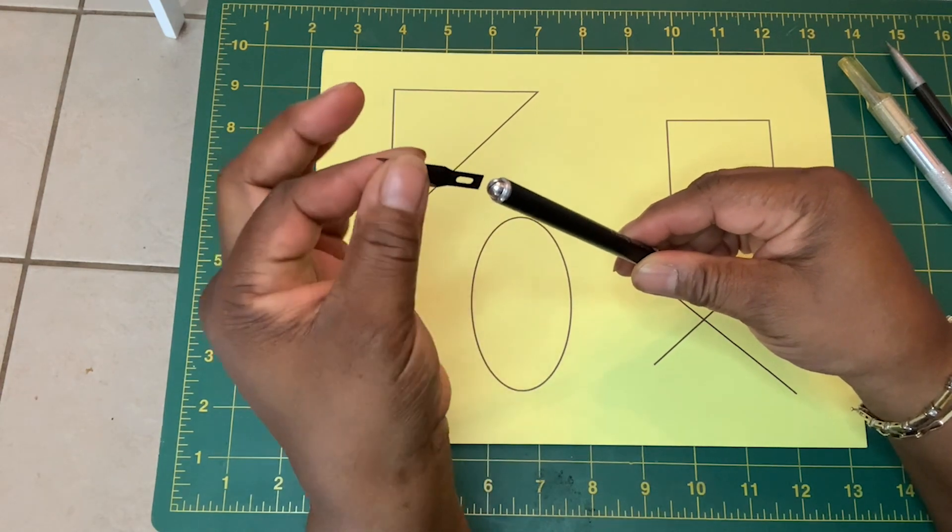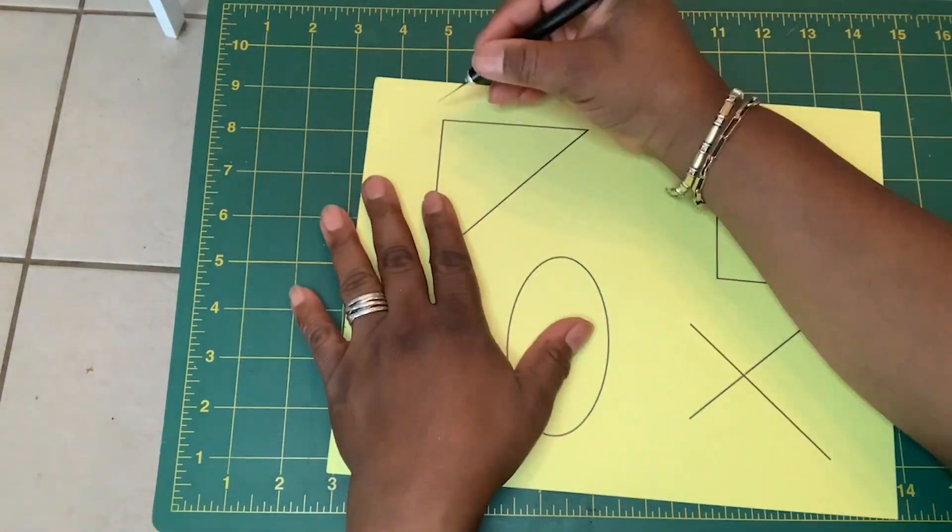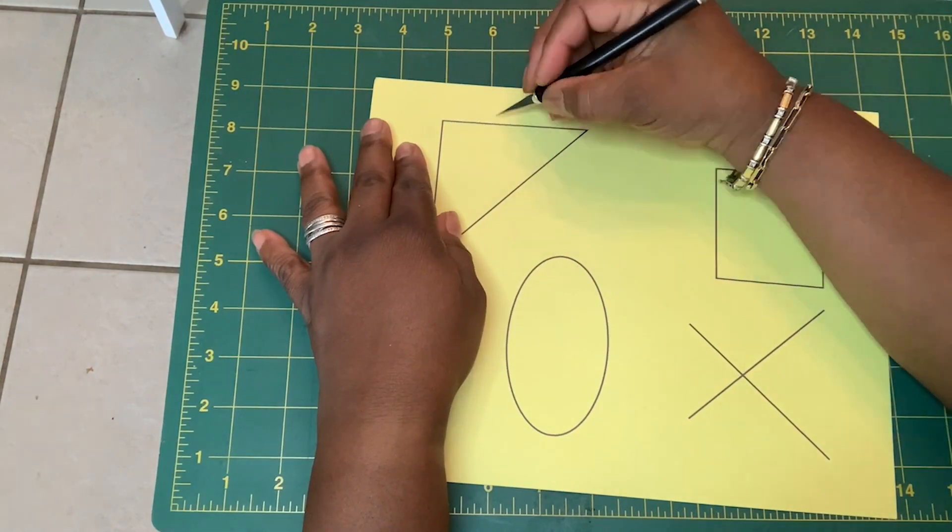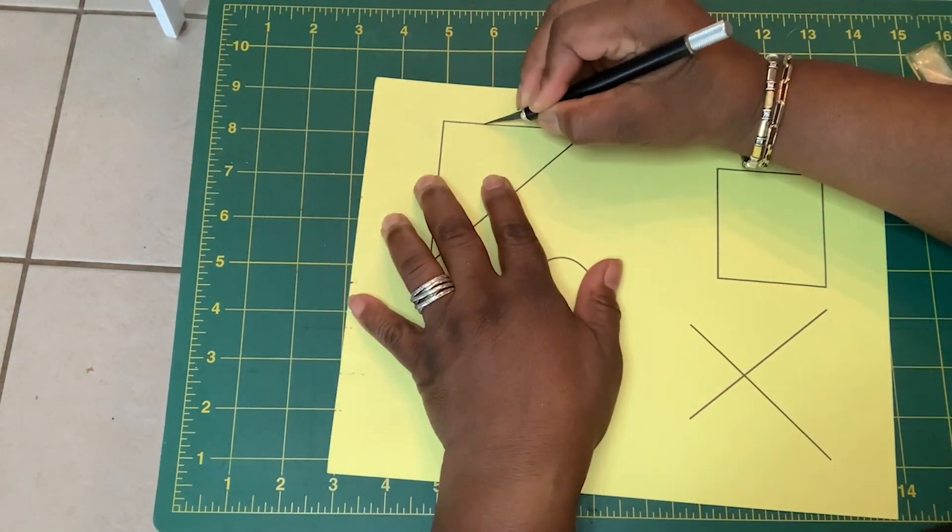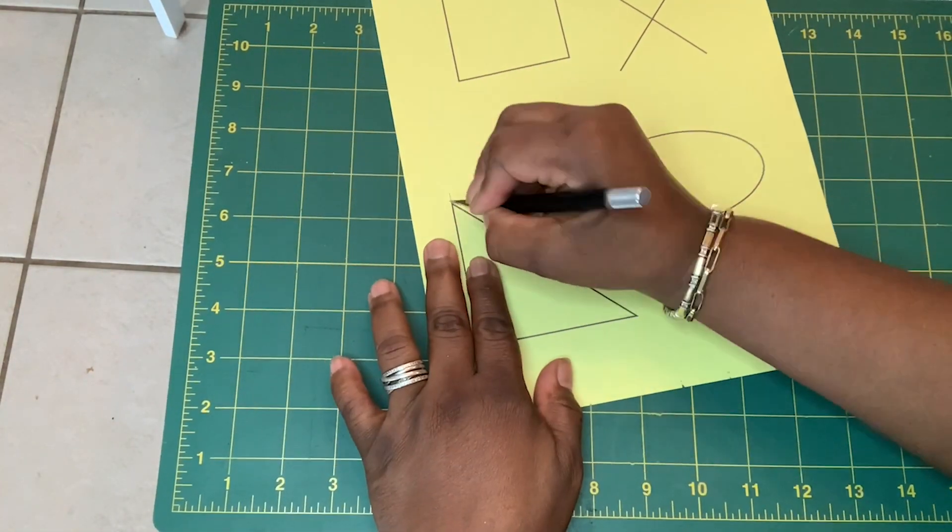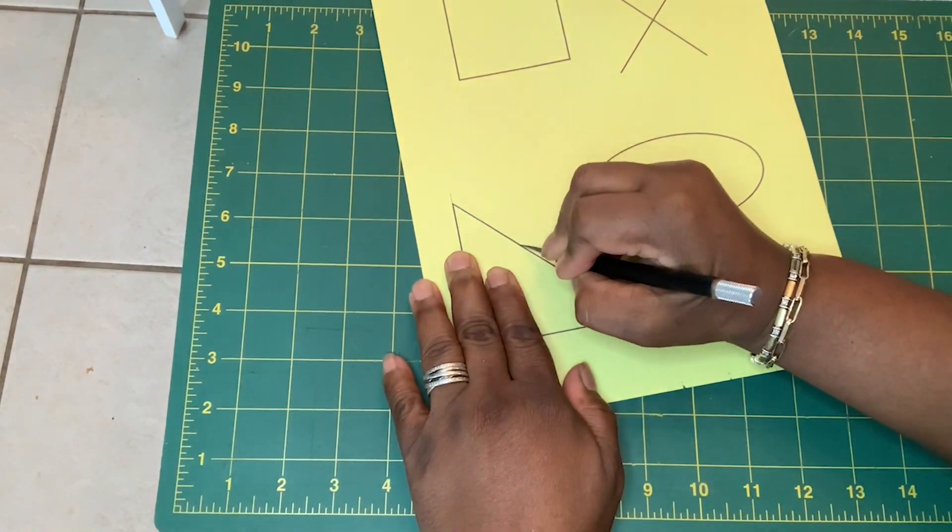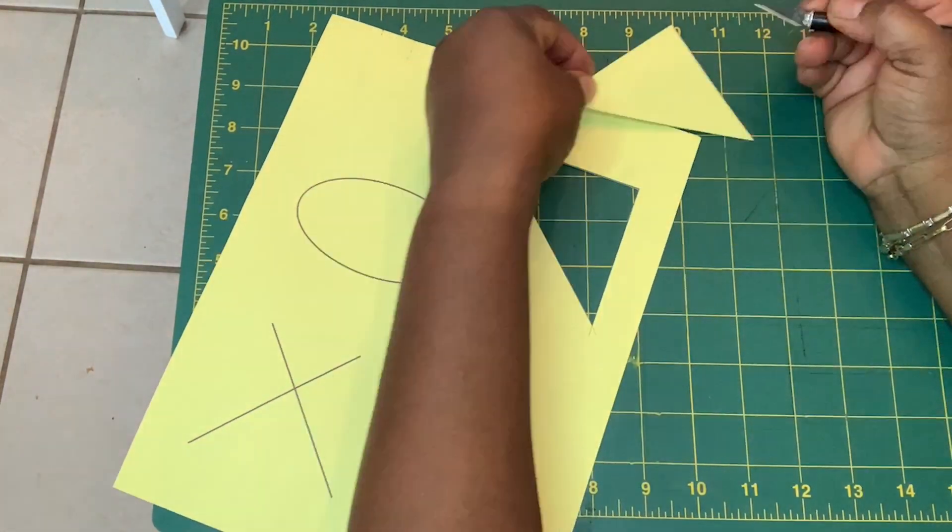The exacto knife gives me precision cuts. If I want to make a circle, I make a circle. If I want to cut straight lines, I cut straight lines.